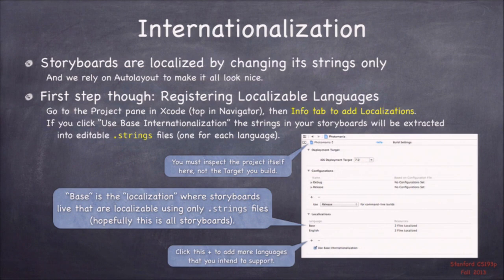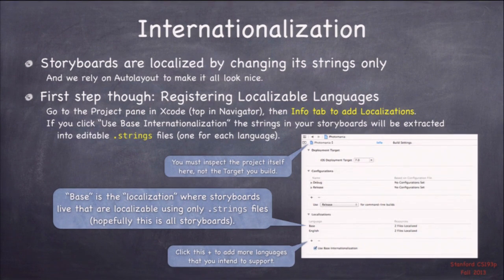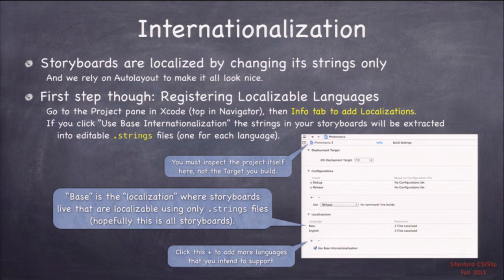The first thing we need to do before any localization is go to our project settings and set the list of all the languages we're going to support. One tricky thing: you're used to going to your project settings — that upper left-hand part of the navigator — but actually what we've been setting there is the target. Here you want to set the settings of the project itself. When you do, there's not a lot of settings; you'll see localizations at the bottom — just a list of languages. These are pre-supported languages matching what iOS supports. When you hit the plus button, you'll get a pop-up with a list of supported iOS languages.